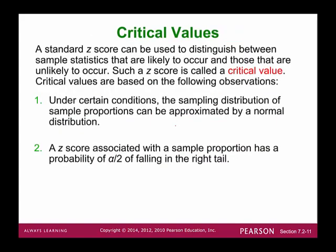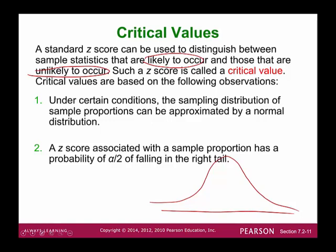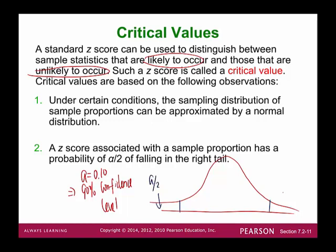Now let's move on to critical values. The standard z-score is used to distinguish between sample statistics that are likely to occur and those that are unlikely to occur. For example, if alpha equals 0.10, that means this is a 90% confidence level. On the two tails, each tail occupies alpha over 2, which equals 0.05. The center region of 1 minus alpha, which is 90% or 0.90, represents the likely events.